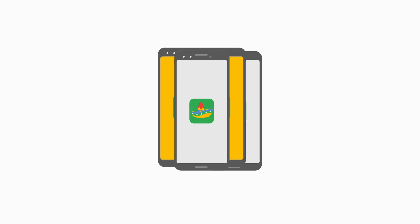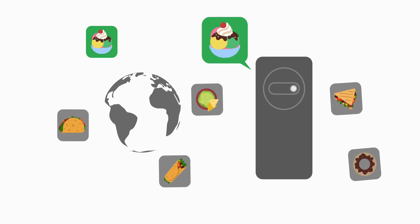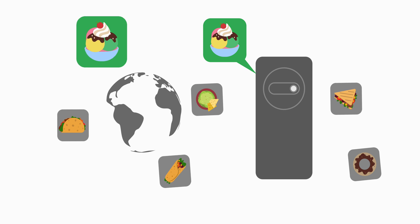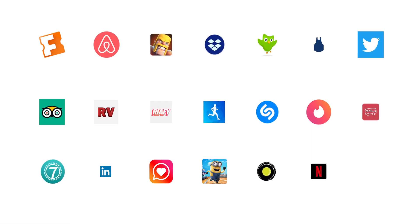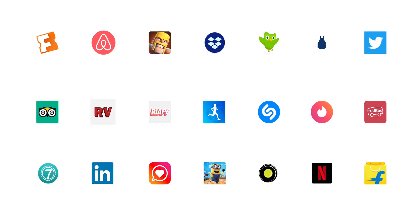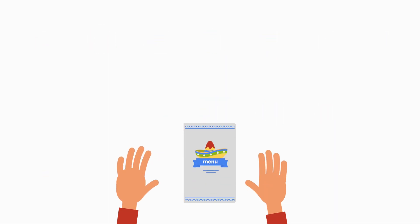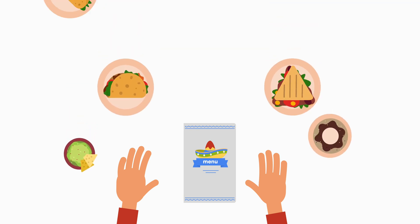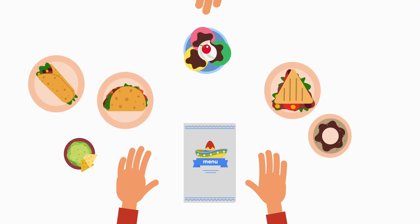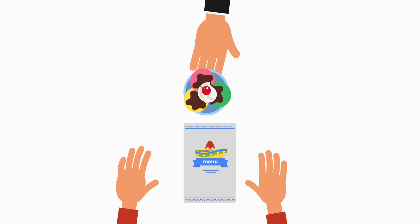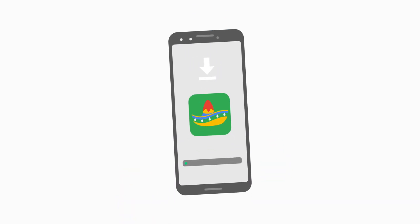You can choose to deliver features to specific countries, devices, or you can deliver features on demand only when users need them. Tens of thousands of popular apps have already adopted the Android App Bundle. You no longer need to deliver a giant monolithic app to all your users at install time. And with dynamic feature modules, you can serve only what your users need, speeding up your engineering velocity and build times.